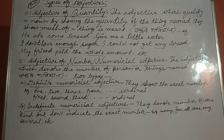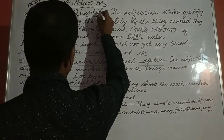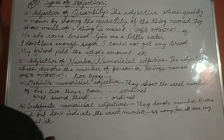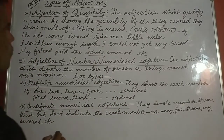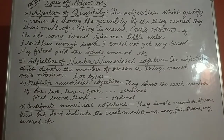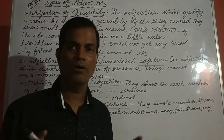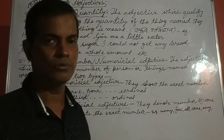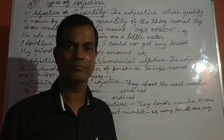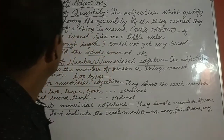Adjective of quantity. Definition: the adjective which qualifies a noun by showing the quantity of the thing named — that type of adjective is called adjective of quantity. Adjective of quantity shows the full measure or amount of something.